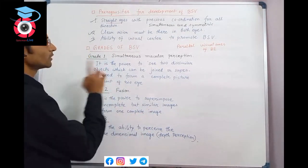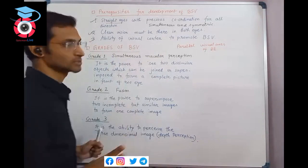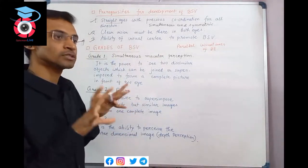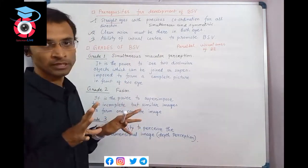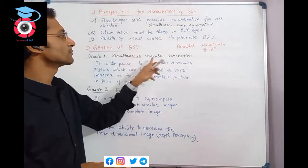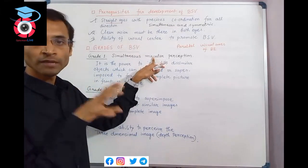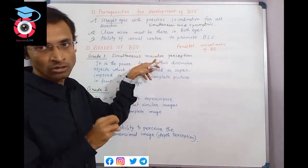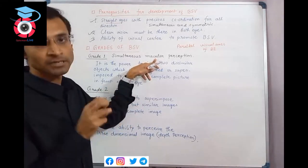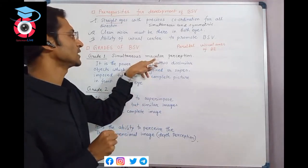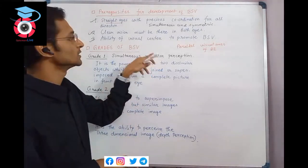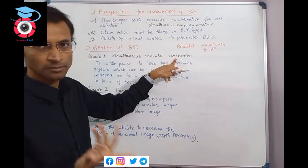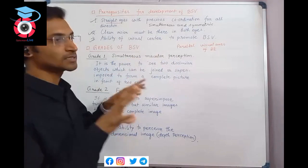Grade 1 of binocular vision is simultaneous macular perception. This refers to simultaneous perception at the macular level - maximum visual perception at the macular area. The macular area provides macular visual perception simultaneously from both eyes.